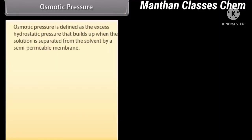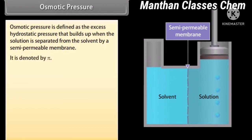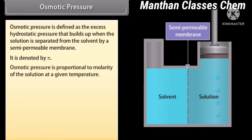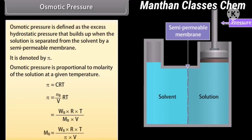Osmotic Pressure: Osmotic pressure is defined as the excess hydrostatic pressure that builds up when the solution is separated from the solvent by a semi-permeable membrane. It is denoted by π. Osmotic pressure is proportional to the molarity of the solution at a given temperature: π = CRT. Substituting the value of C gives π = (WB × R × T) / (MB × V), and the molecular mass MB = (WB × R × T) / (π × V).